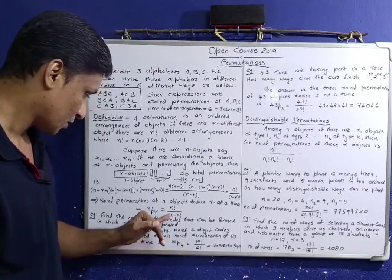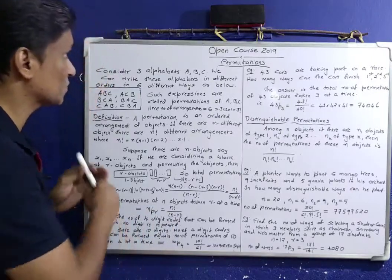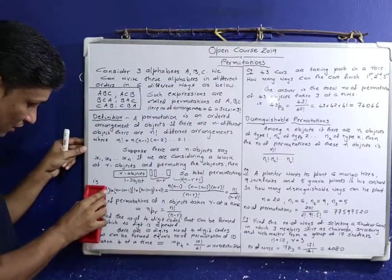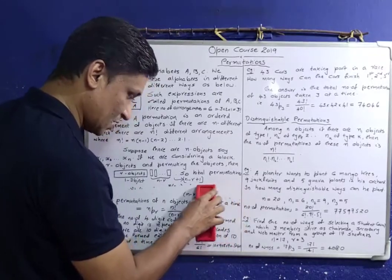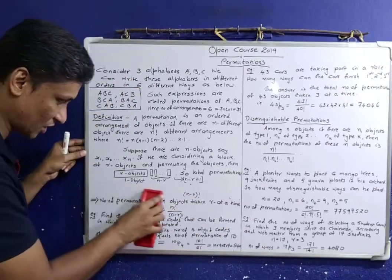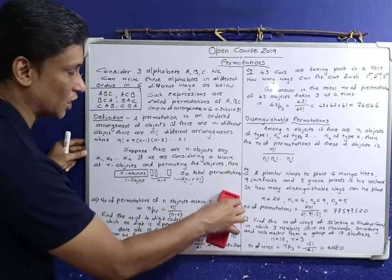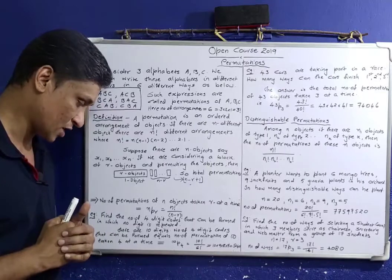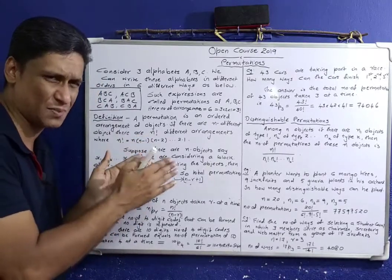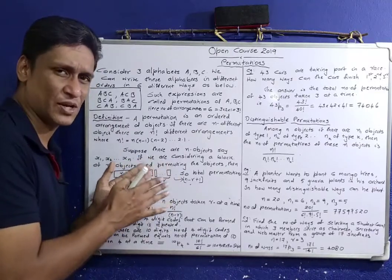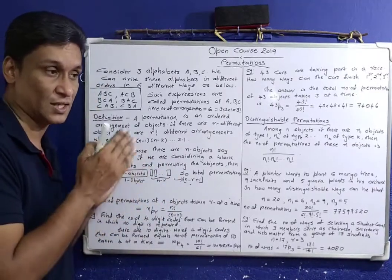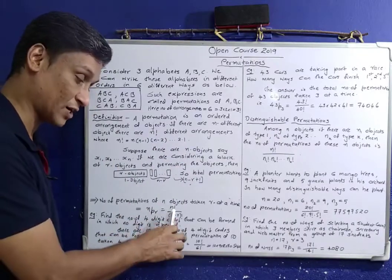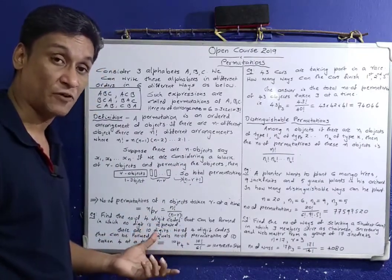Total number of permutations of n objects is n factorial. Total number of permutations of n objects taken r at a time — that is nPr — equals n factorial divided by n minus r factorial.